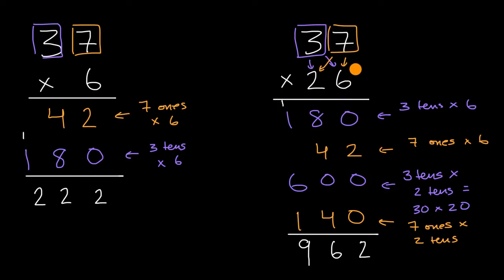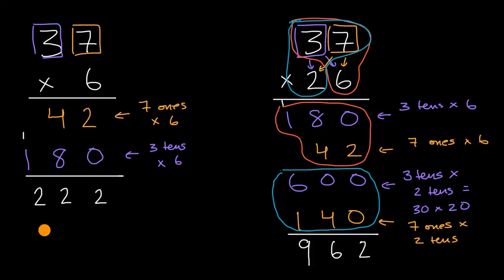I really want you to understand what we just did. It might look complicated, but first we thought about 37 sixes—that's where we got these numbers from, and that's what we did in a previous video. Then we thought about 37 twenties, and that's where these numbers came from.